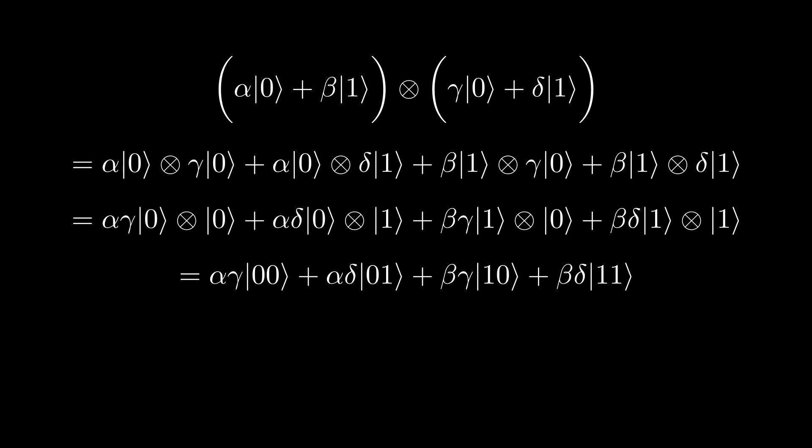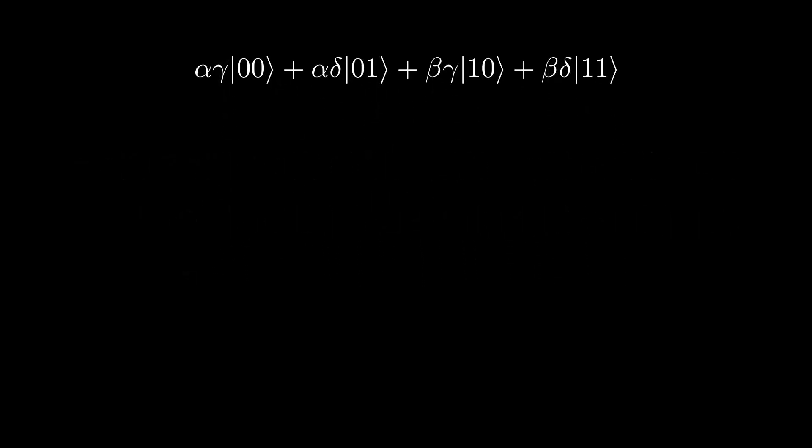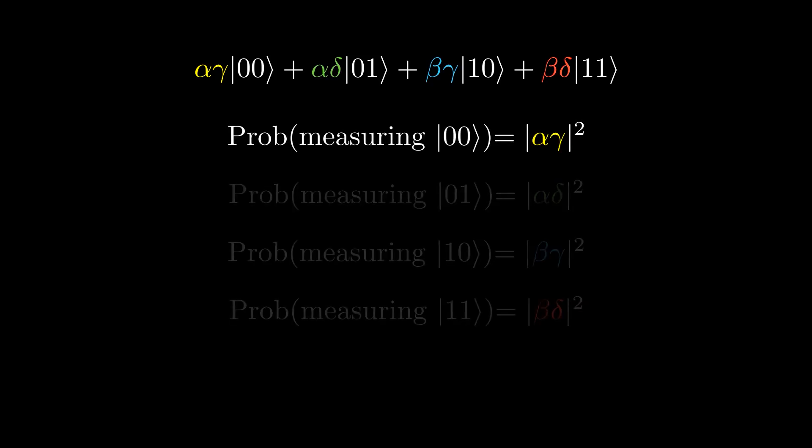Measurement works the exact same as before. Furthermore, the probability of measuring zero zero is the magnitude squared of the coefficient of the zero zero state, and so on.